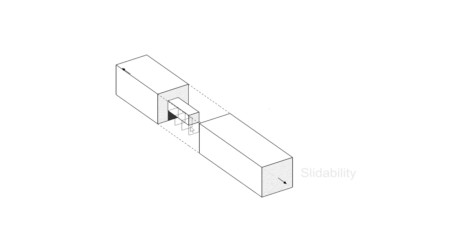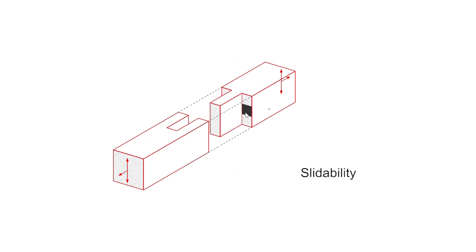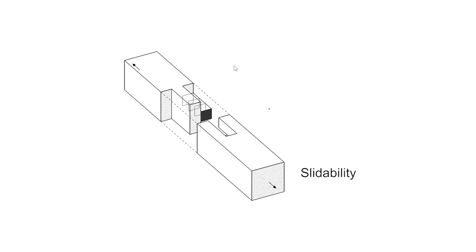Tsugite analyzes the slidability of the current design. Unblocked sliding directions are shown by arrows at the end of each timber. A red outline indicates that the timber is sliding too much.